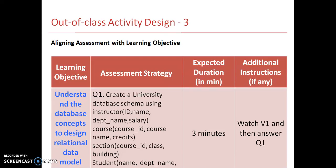Now we are aligning assignments with each learning objective. For Learning Objective 1, the assessment strategy is: create a university database with an instructor table (ID, name, department name, salary), a course table (course ID, course name, credit), a section table (course ID, class building), and a student table (name, department name, total credits). The expected duration is watching the 3-minute Video 1 segment. The additional instruction is: watch video V1 and then answer question Q1.